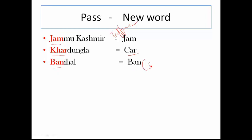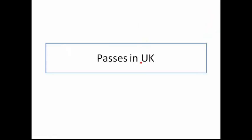Ban means stopped. So we got three words: Jam, Car, Ban. Now I am going to make a trick using these three words. The sentence is: 'There is a traffic jam in the city, so all cars are banned.' If you by heart this sentence, it is easy to remember all the passes in Jammu Kashmir — Kardungla pass (car) and Banihal pass (ban).